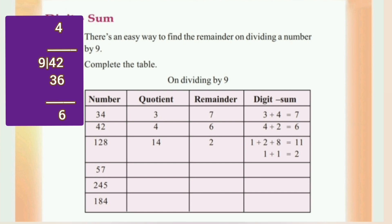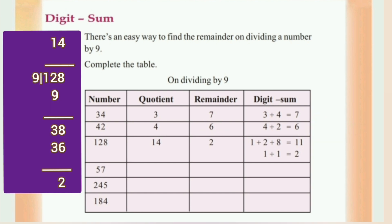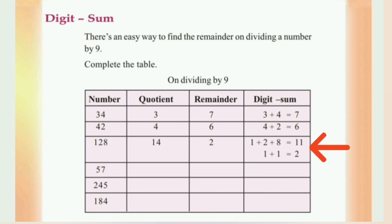Next number: 42 divided by 9. 4 into 9 is 36, so the quotient is 4 and the remainder is 6. The digits in the sum: 4 plus 2 equals 6. The remainder is 6 and the digits in the sum is also 6. The digits in the sum is 1 plus 5, that is 2, and the remainder is also 2.